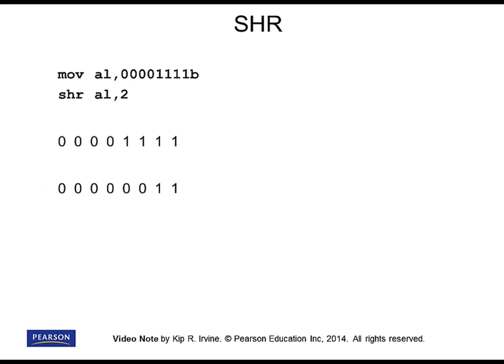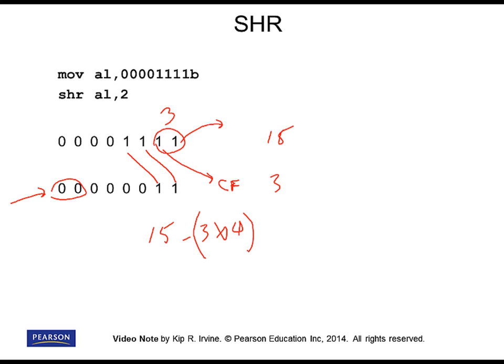Let's try another example — shifting right by two bits. This bit moves to this position, this one moves here, this bit disappears completely, and this bit ends up going into the carry flag because it's the last bit to be shifted off the end of the number. Meanwhile, these two high bits are filled with zeros from the left-hand side. You can also think of this as division by powers of two: the number we started with was 15, and the result is 3 because we divided by 4. It doesn't come out evenly — 4 times 3 is 12 with a remainder of 3, which gets lost.